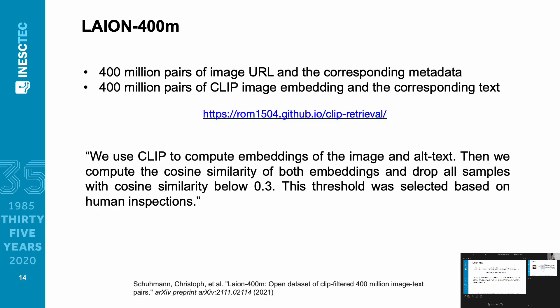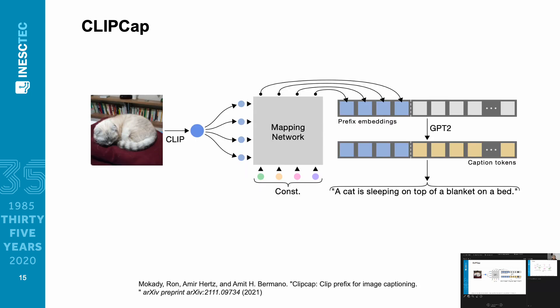One application of CLIP is in the LAION dataset. They initially proposed the LAION 400M dataset; currently they are at a five-terabyte dataset. Basically, they collect images and texts from the web — an essentially infinite source of data — and use CLIP to filter this data and automatically assess whether the data is of sufficient quality. So one direct application of CLIP is building super large-scale datasets.